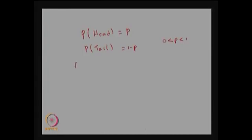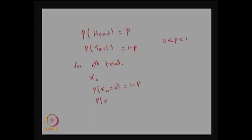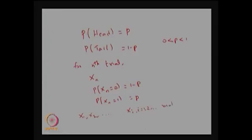For the nth trial, denote the random variable Xn whose values are 0 or 1. The probability that Xn takes the value 0 — that is, getting a tail in the nth trial — is 1-P, and the probability that Xn takes the value 1 — corresponding to a head — is P. Thus you have a sequence of random variables X1, X2, and so on, forming a stochastic process, where all the Xi's are mutually independent random variables.